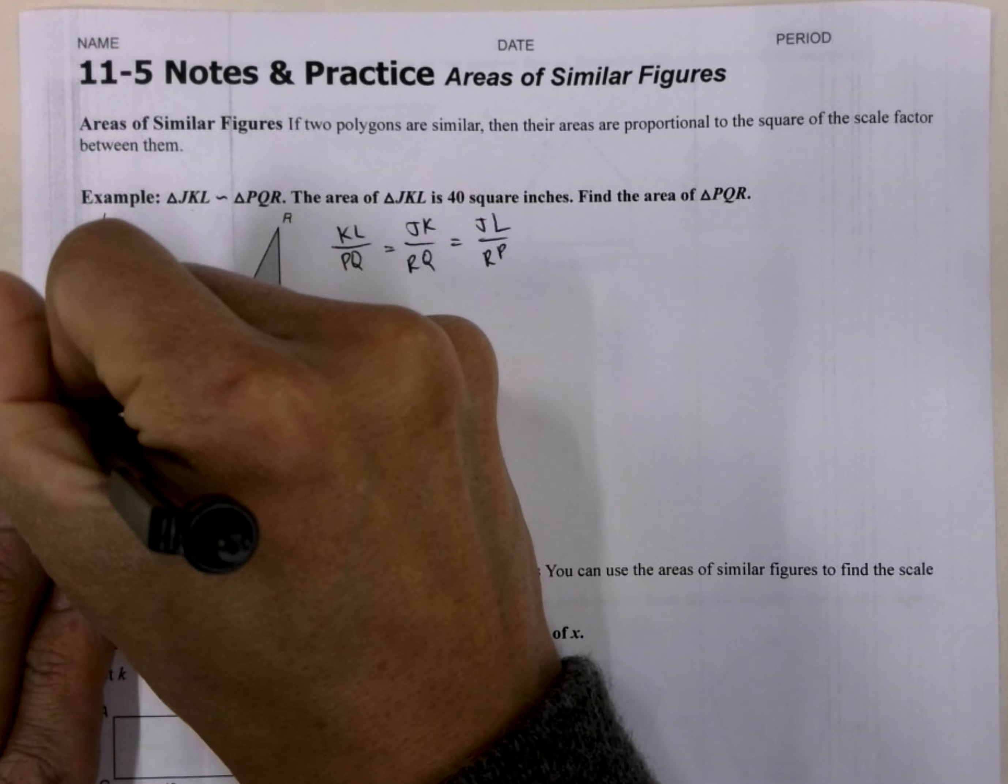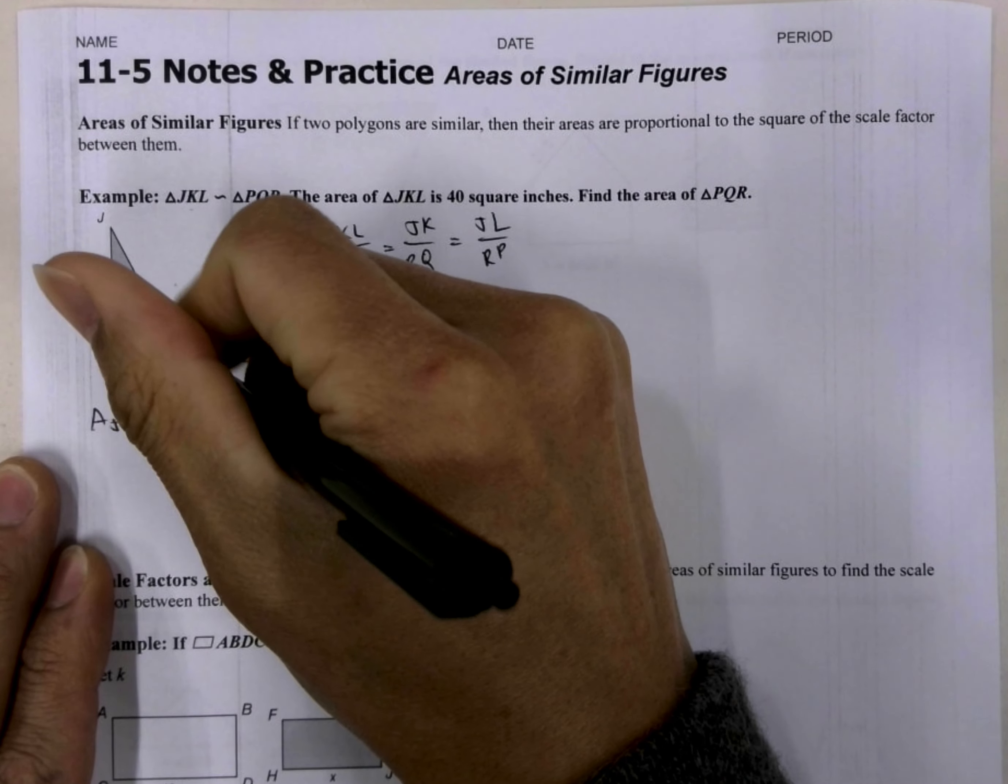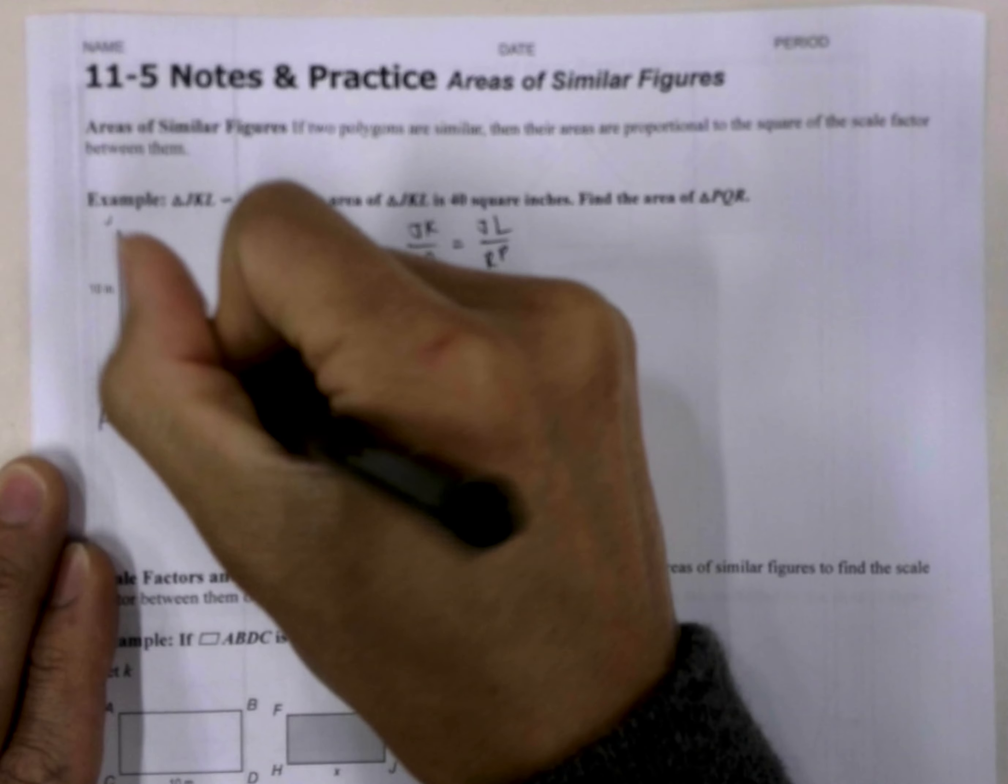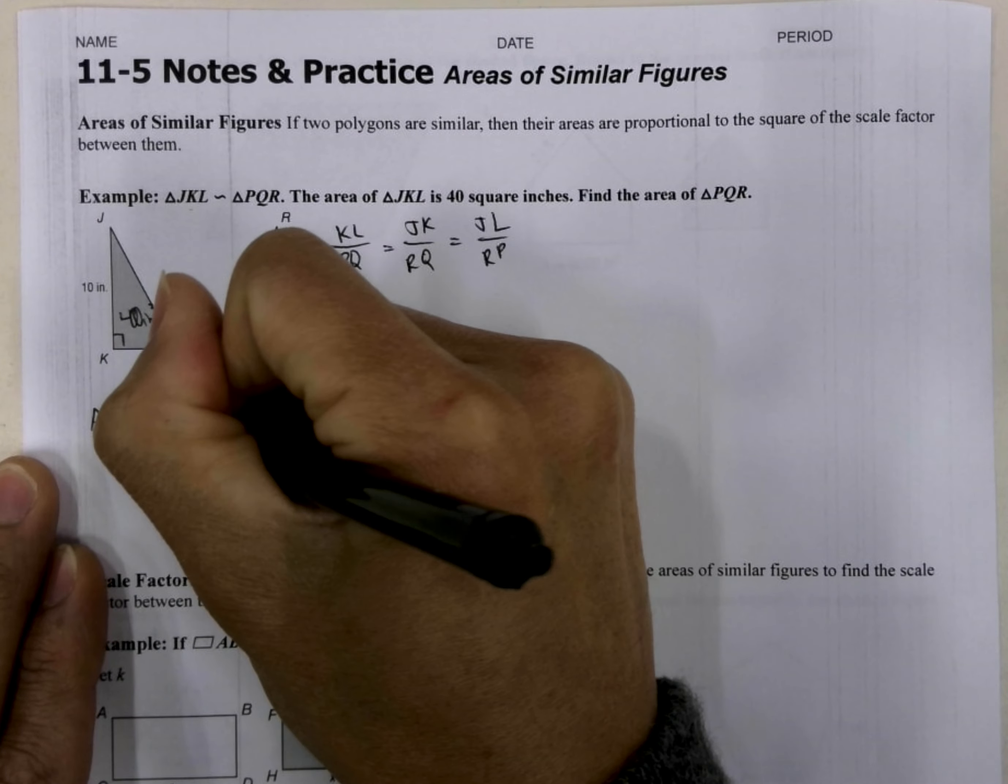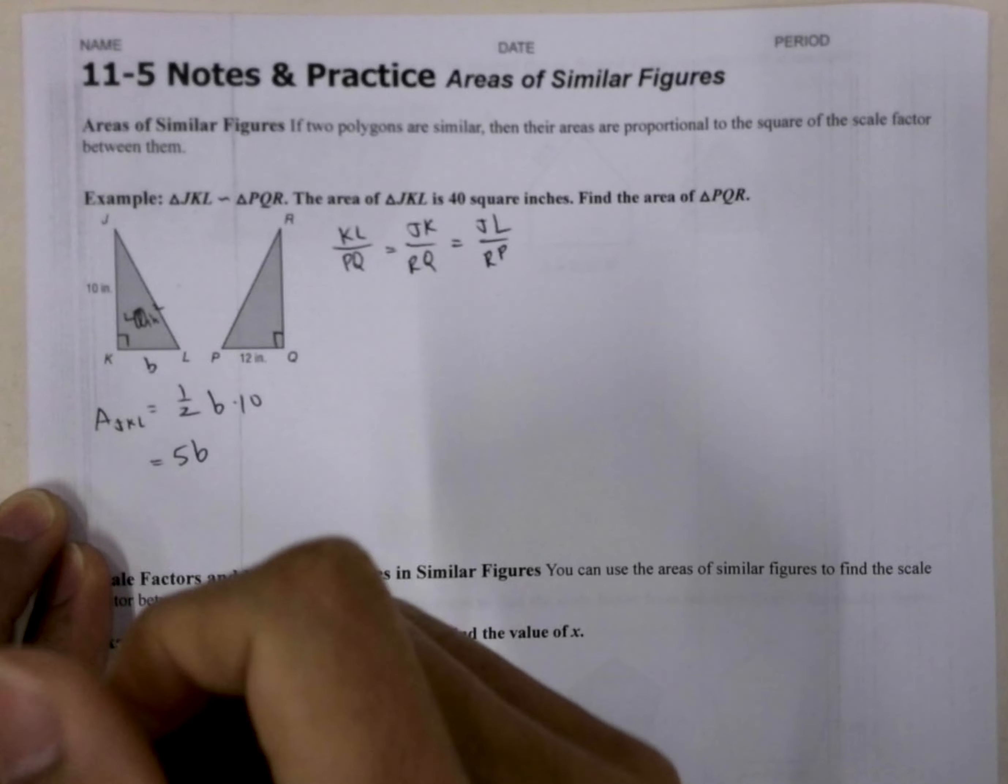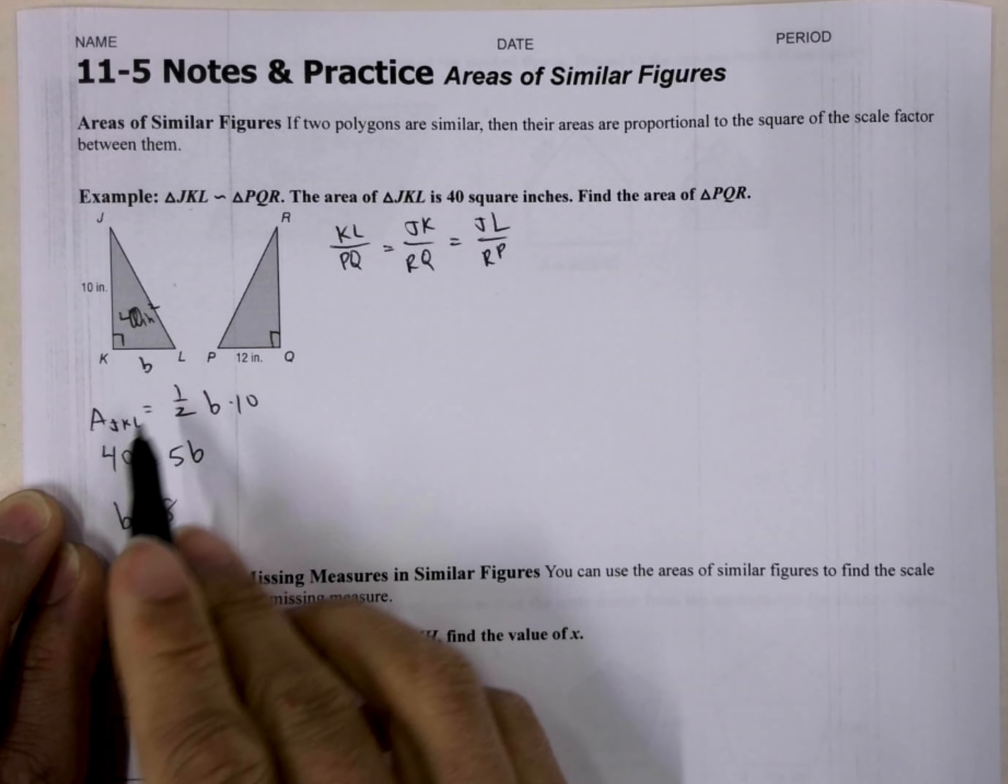So if that's true, then we can find KL because the area of JKL is equal to 1 half the base, which is KL, so I'm just going to do base times the height, times 10. So then that's going to equal 5B is equal to the area, and we know the area is 40, so we're going to do 40 over here. Divide by 5, and we'll get base is equal to 8. So the base is 8.